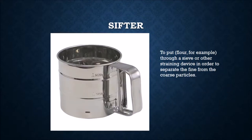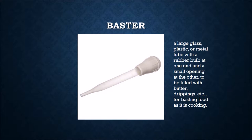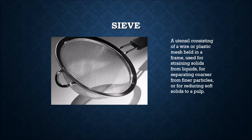A sifter is used to put flour, for example, through a sieve or straining device in order to separate the fine from the coarse particles. A baster is a large glass, plastic, or metal tube with a rubber bulb at one end and a small opening at the other, used to fill with butter drippings for basting food as it cooks. A sieve is a utensil consisting of a wire or plastic mesh held in a frame, used for straining solids from liquids, separating coarser from finer particles, or reducing soft solids to a pulp.